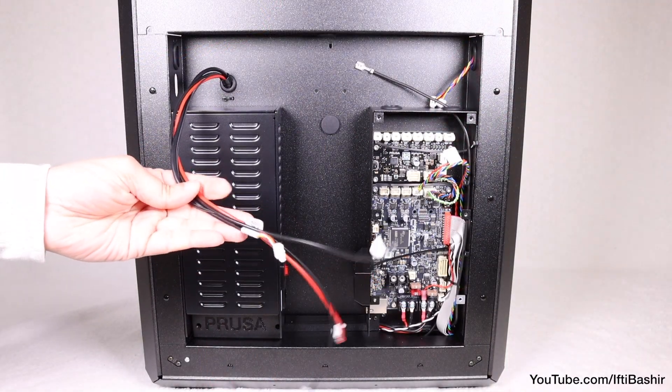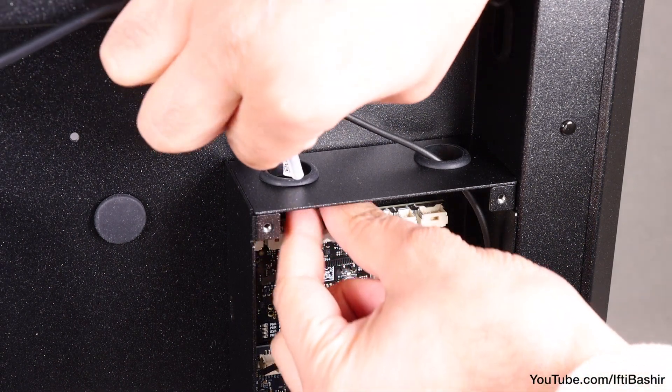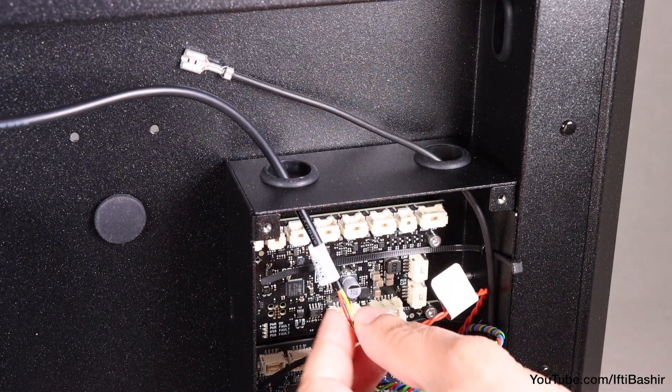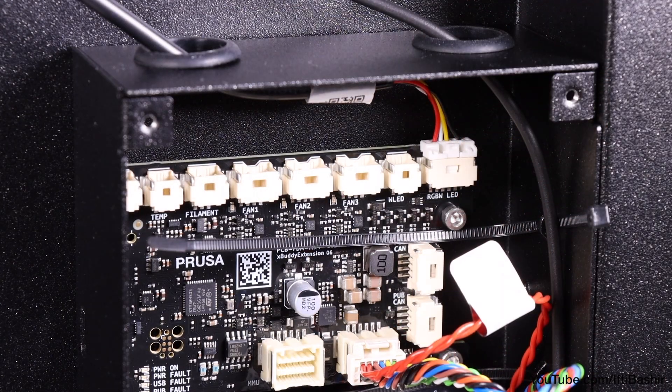We'll go ahead and get these cables connected up now. Starting with the LED strip cable, guide it through the top right hole on the electronics chassis, and connect to the first slot on the right of the buddy expansion board.